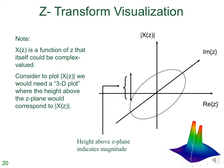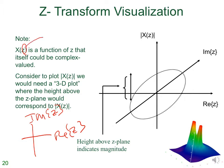For Z-transform visualization, you often look at the z-plane showing the real part of z versus the imaginary part, similar to the s-plane. It's important to remember that this is the argument of X(z), but X(z) itself will also have a real and imaginary part.